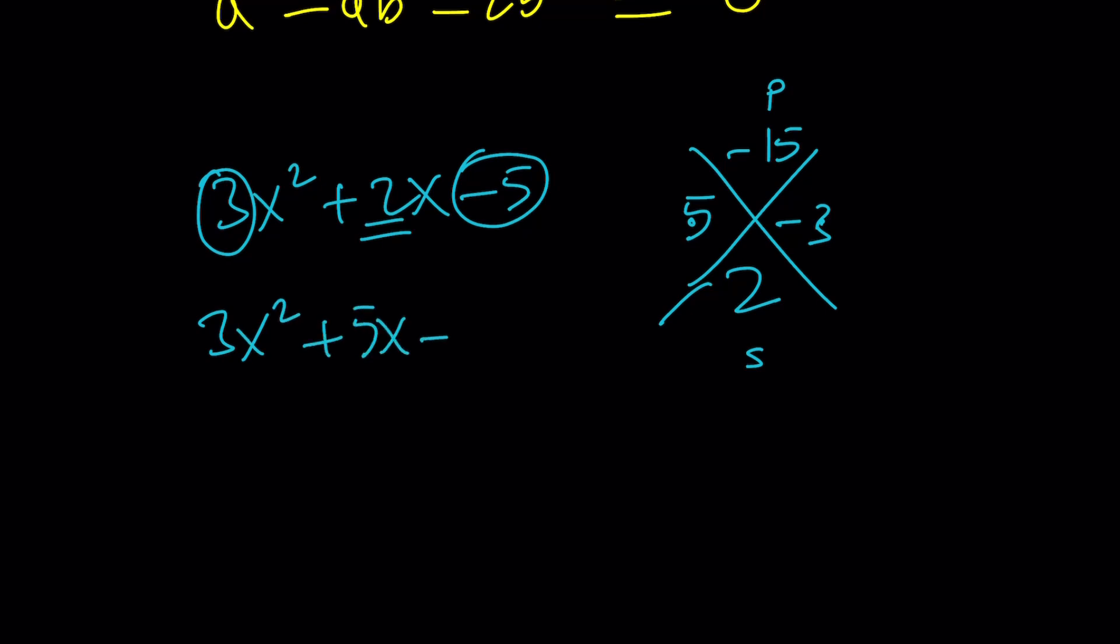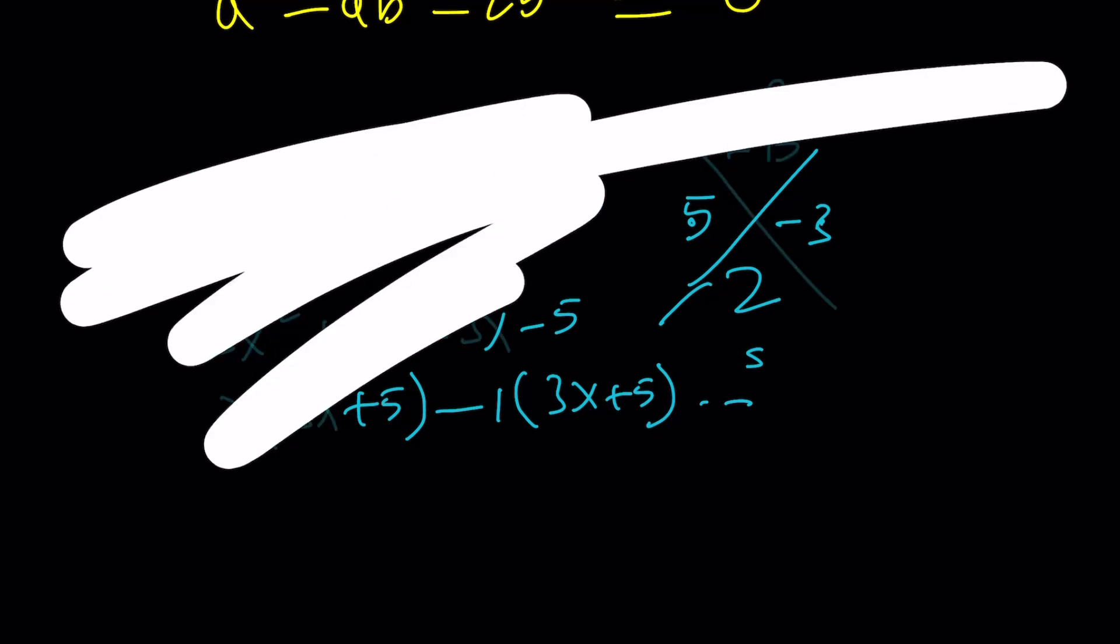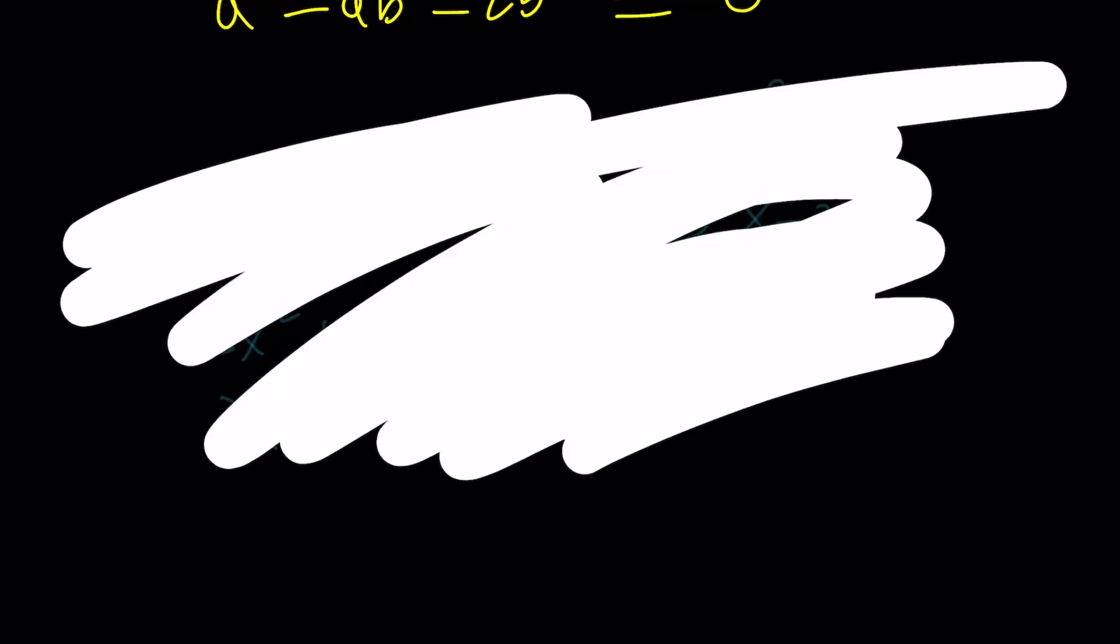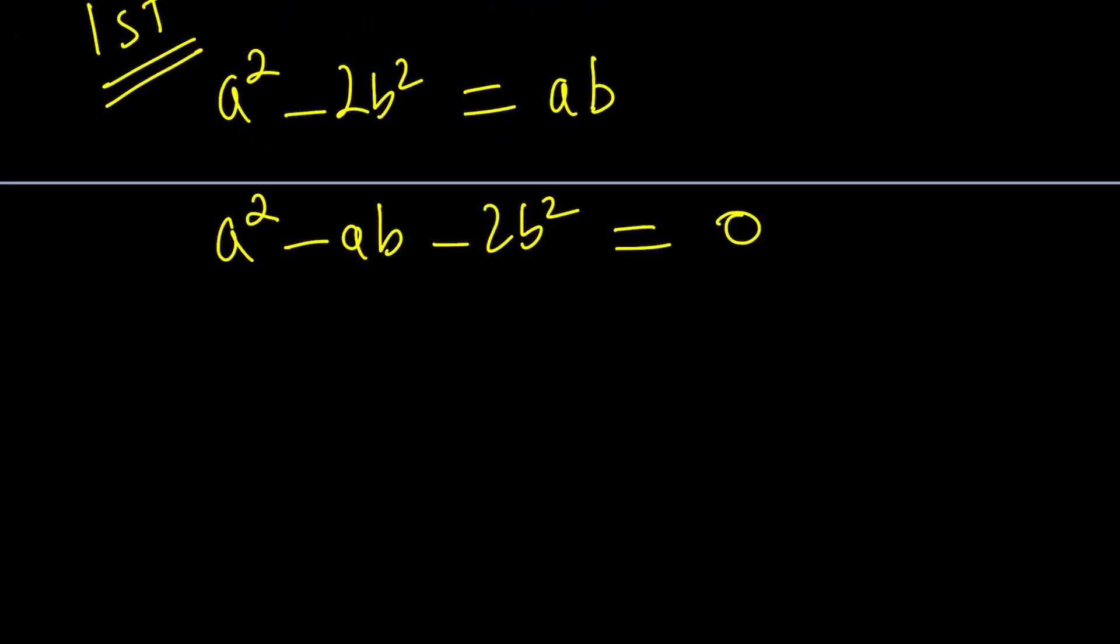They tell you how to break down the 2, so we break it down like 3x squared plus 5x minus 3x minus 5. This is factorable. Take out x, 3x plus 5. Take out negative 1, 3x plus 5, so on and so forth. This is called the x method. There's an easier way to do it. Obviously you can do it with the x method, but the problem is there are two variables. It still works by the way.